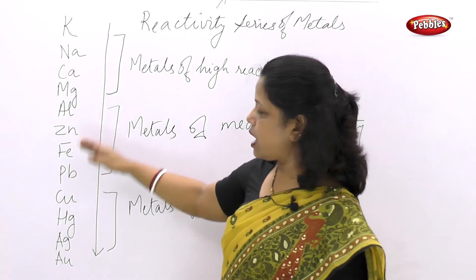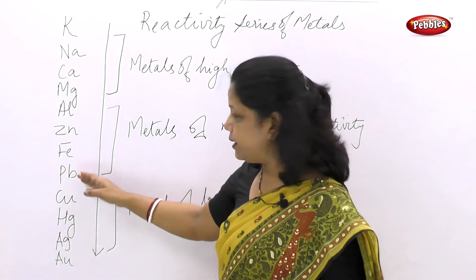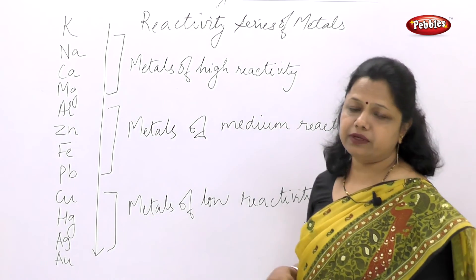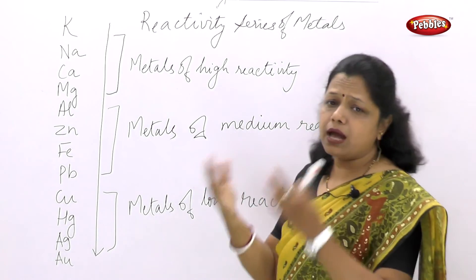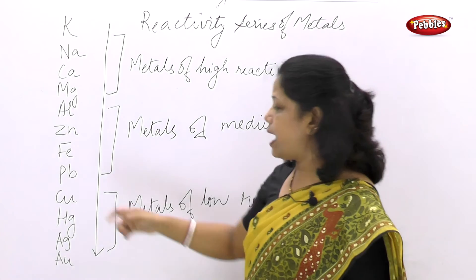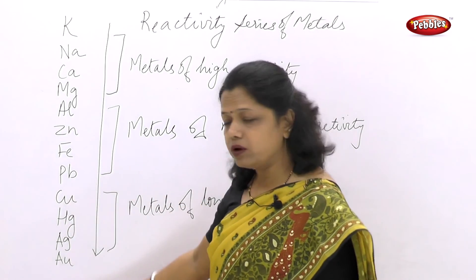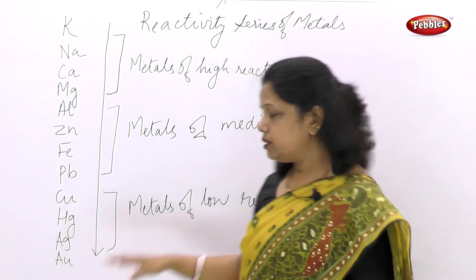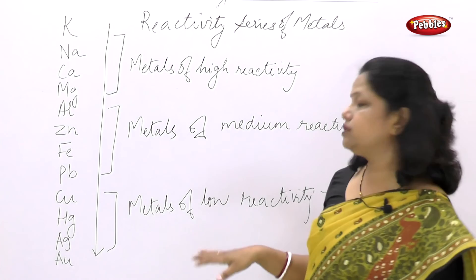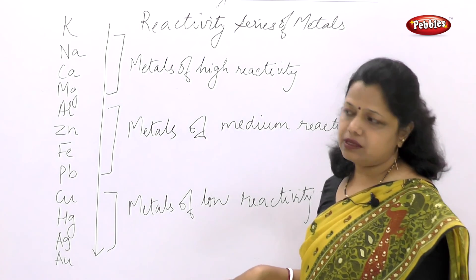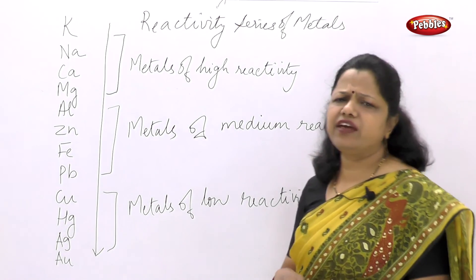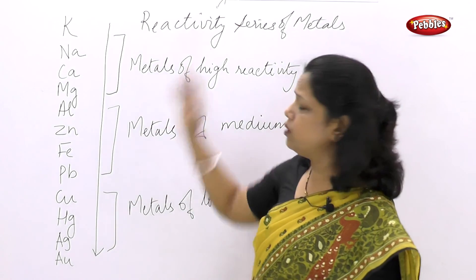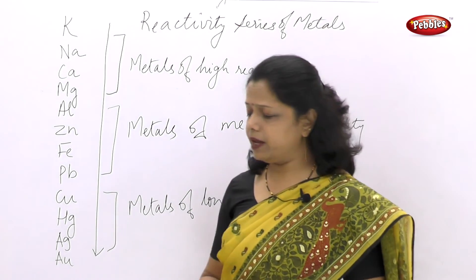Aluminium, zinc, iron, and lead are the metals of medium reactivity — not so high, not so low. The last four — copper, mercury, silver, gold — are present in the low reactivity category, because they are very, very less reactive as compared to the other elements.